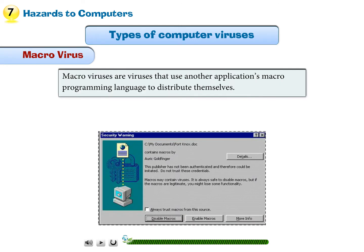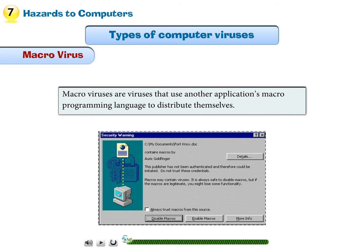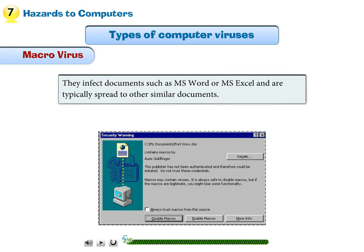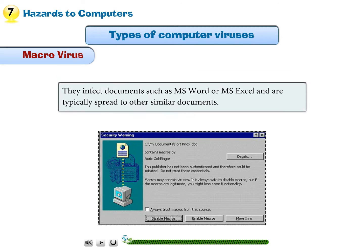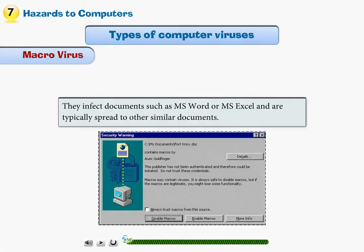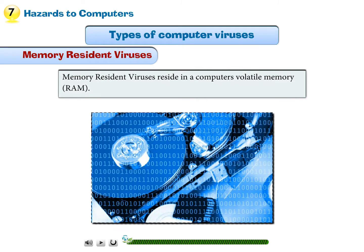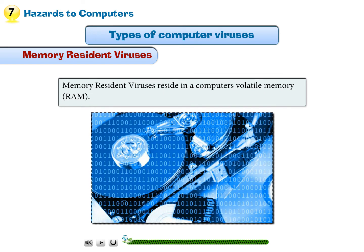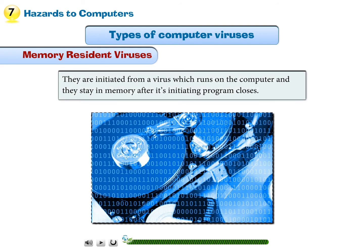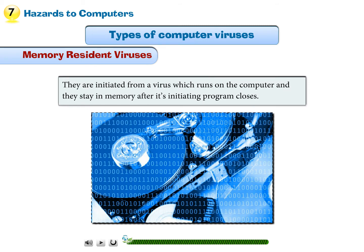Macro virus: Macro viruses use another application's macro programming language to distribute themselves. They infect documents such as MS Word or MS Excel and are typically spread to other similar documents. Memory resident viruses reside in a computer's volatile memory (RAM). They are initiated from a virus which runs on the computer and stay in memory after its initiating program closes.